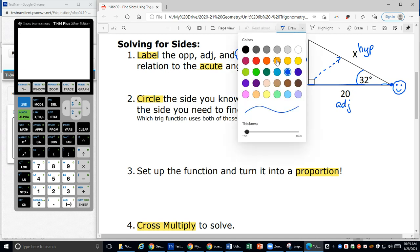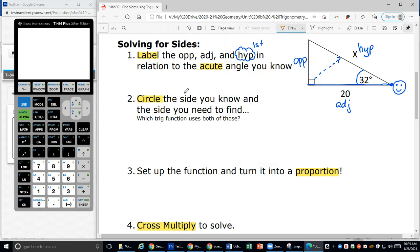Step two is going to be to circle the side we know and the side we are trying to find. We're going to circle two things. I don't know anything about the opposite. But I do know that the adjacent is 20 units long. And the side I'm trying to find where my x is, is my hypotenuse. So the sides that I'm circling are my adjacent side and my hypotenuse.